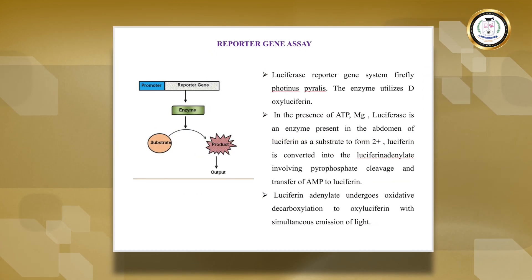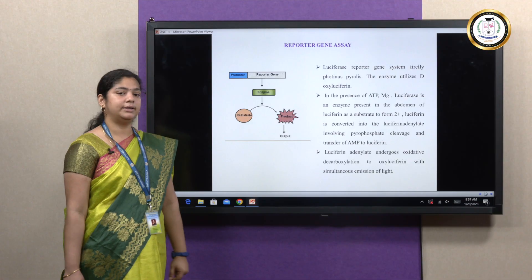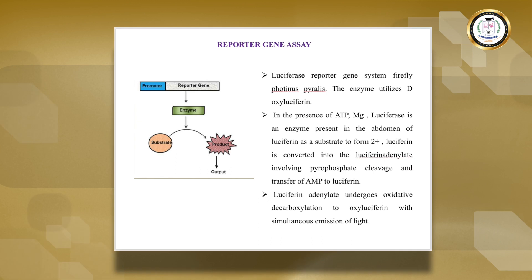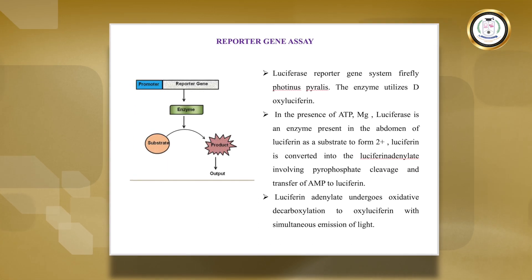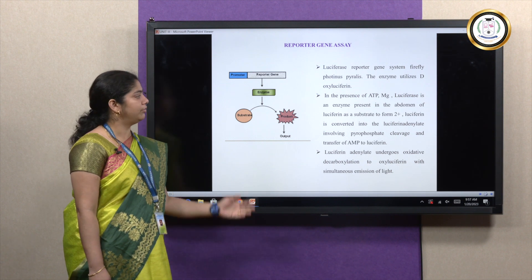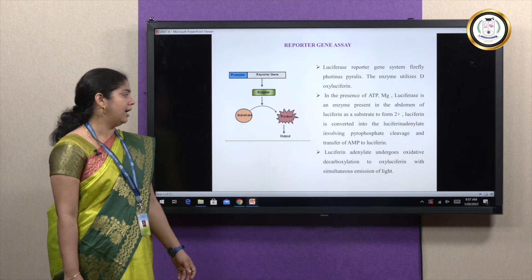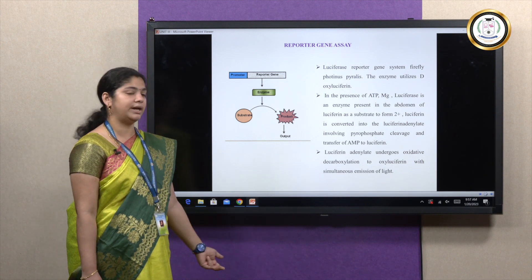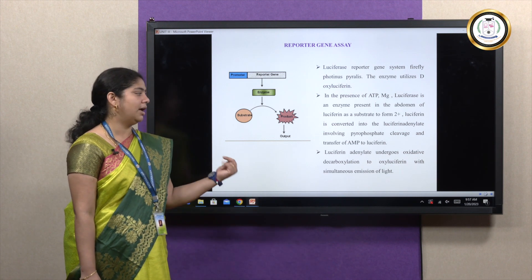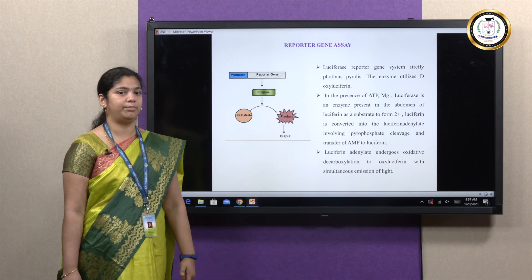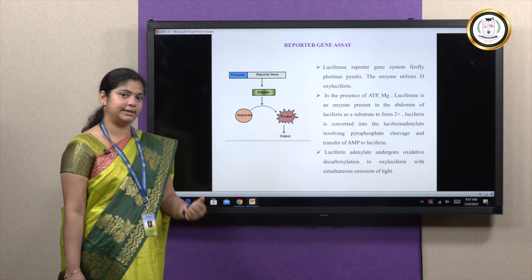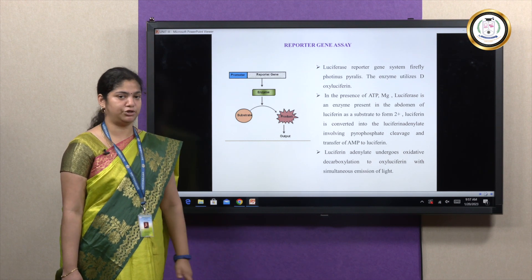Another method is the reporter gene assay, where the reporter gene — the target gene — can be obtained as a fluorescent product. Once you get the reporter gene cloned and the substrate is added, you get an output in fluorescence. The fluorescence is obtained using luciferin; luciferin adenylate undergoes oxidative decarboxylation, stimulating light emission. This signal indicates expression of the gene.